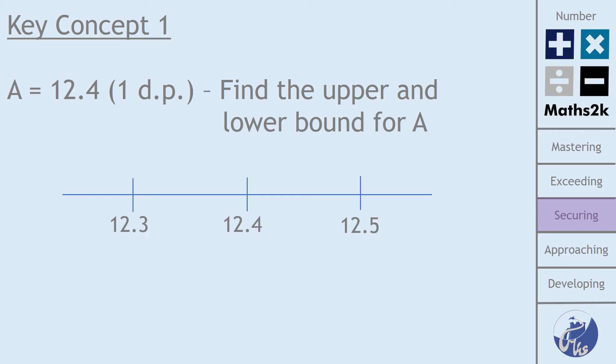So because it's rounded to 12.4, that means that our lower bound and our upper bound are placed halfway between these values on this number line. So our lower bound is going to be 12.35 and our upper bound is going to be 12.45.